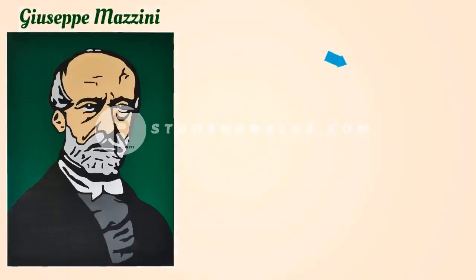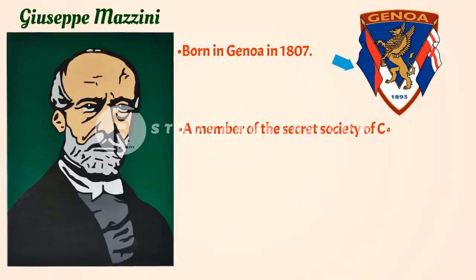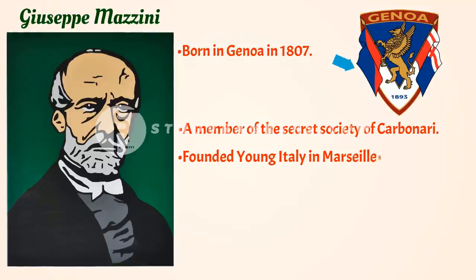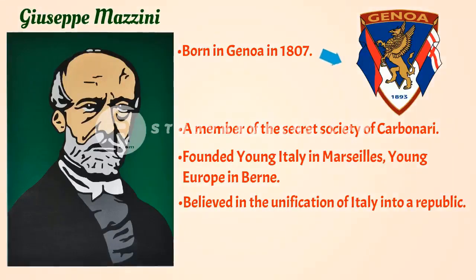We will now talk about Giuseppe Mazzini, an Italian revolutionary. He was born in Genoa in 1807 and became a member of the secret society of Carbonari. At the age of 24, he was sent into exile in 1831 for attempting a revolution in Liguria. He founded two more underground societies: first, Young Italy in Marseille, and then Young Europe in Berne. He believed in the unification of Italy into a republic on the basis of Italian liberty. Inspired by his ideas, secret societies were set up in Germany, France, Switzerland, and Poland.